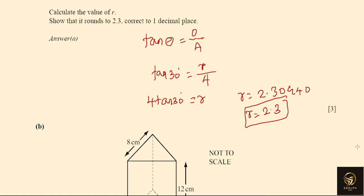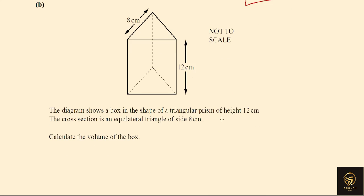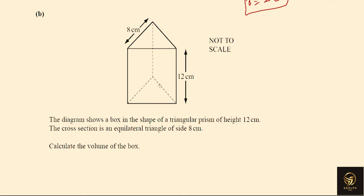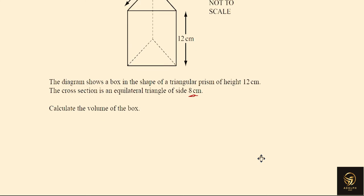You might feel there is nothing new so far — the new and amazing part is in Part C. Let's go to Part B first: the diagram shows a box in the shape of a triangular prism of height 12 centimeters. The cross-section is the equilateral triangle from the previous part, with sides of 8 centimeters. We need to calculate the volume of the box.